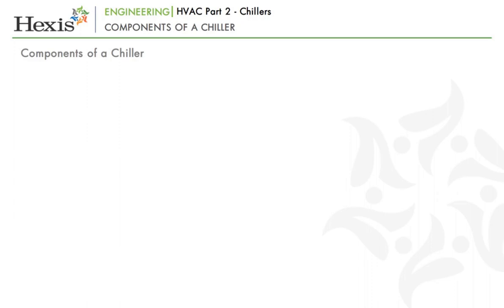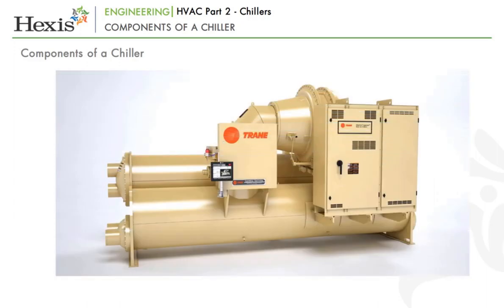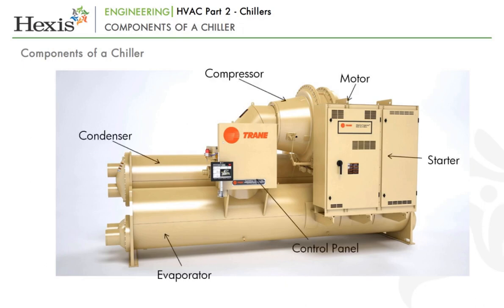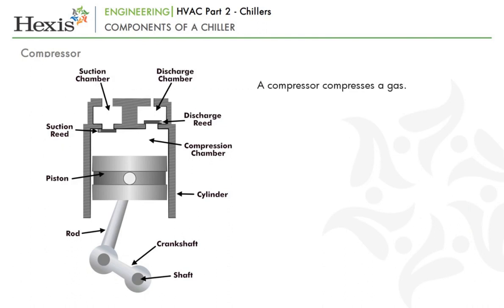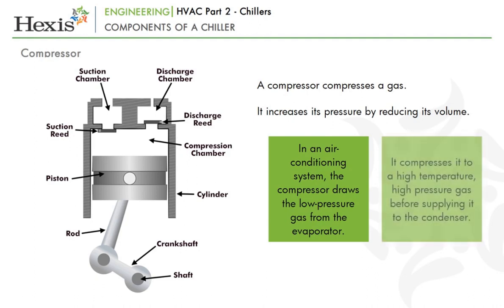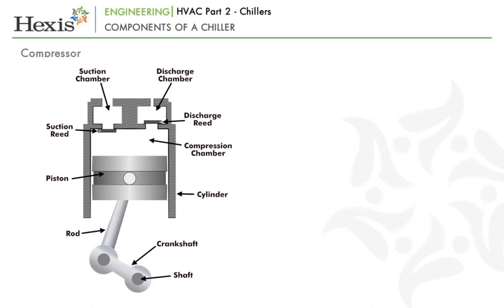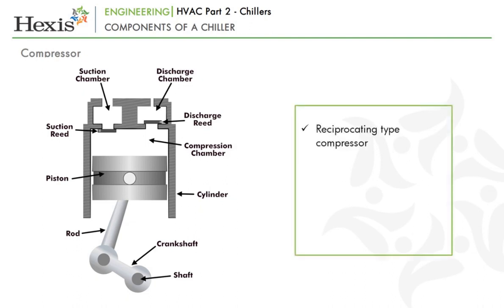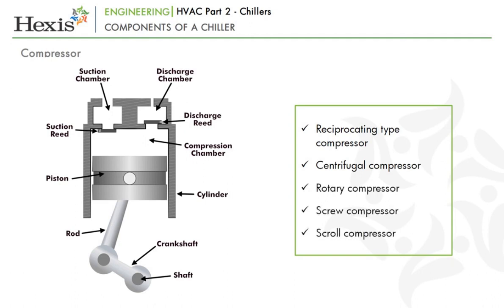Let us now look at the components of a chiller. The main components of a chiller are the same as those of air conditioning systems, namely: compressor, condenser, cooling tower, expansion valve and evaporators. In this topic, we will learn about the types of compressors, condensers and evaporators. A compressor is a device that compresses a gas, increasing its pressure by reducing its volume. In an air conditioning system, the compressor draws the low-pressure gas from the evaporator and compresses it to a high temperature, high-pressure gas before supplying it to the condenser. Different types of compressors used in chillers are: reciprocating type, centrifugal, rotary, screw and scroll compressors.